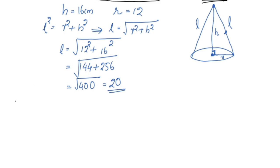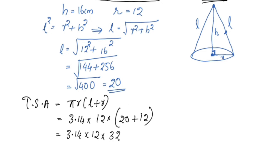The total surface area TSA is πr(l + r). TSA = 3.14 × 12 × (20 + 12) = 3.14 × 12 × 32. Now we will multiply 32 into 12.